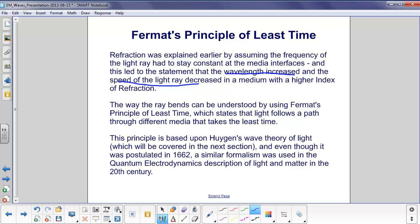There's another way of looking at this, by using Fermat's principle of least time, which states that light follows a path through different media that takes the least time. This is based on Huygens' wave theory of light, which will be covered in the next section. Even though it was developed in 1662, a similar formalism was used in the quantum electrodynamics description of light and matter in the 20th century.